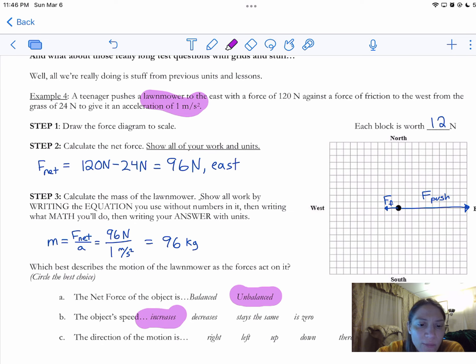The direction of the motion is, let's see, it's to the east. Uh-oh, my choices are right, left, up, down. That should say east. That's okay. We'll pick right because that's the direction the east is in. All right.